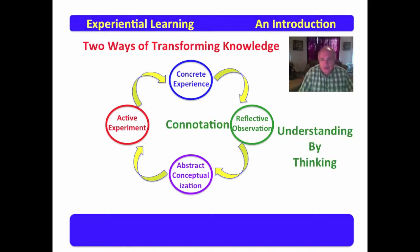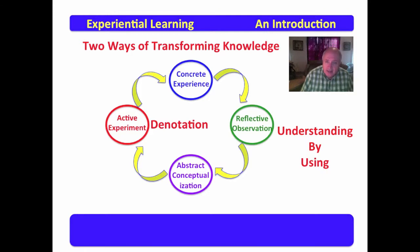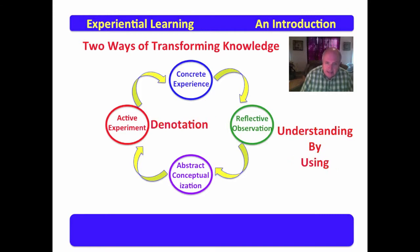There are two ways of transforming knowledge which can be drawn from this model. The first is connotation, which is understanding by thinking. The next is denotation, which is understanding by using — connotation by thinking, denotation by using.